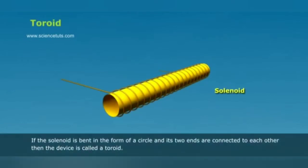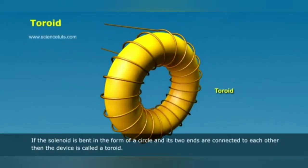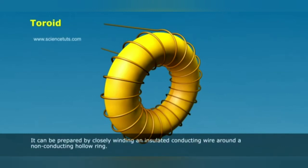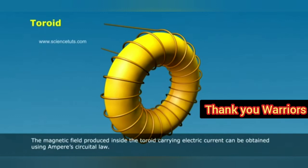A toroid is formed when a solenoid is bent in the form of a circle and its two ends are connected to each other. It can be prepared by closely winding an insulated conducting wire around a non-conducting hollow ring. The magnetic field produced inside the toroid carrying electric current can be obtained using Ampere's circuit law.